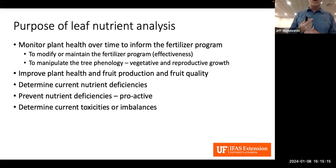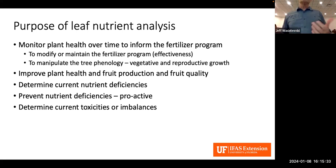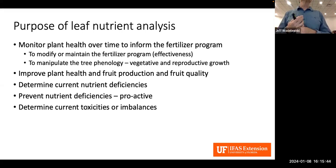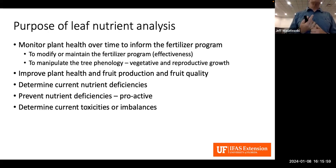Leaf analysis can be used to improve the plant's health, fruit production, and fruit quality. Trees or tropical fruit vines that are not healthy tend to have much less production and lower fruit quality. It's also useful for determining current nutrient deficiencies whether you see them or not — sometimes a deficiency is so mild you don't detect it, but with leaf analysis you can catch it before it becomes a big problem. It can also detect toxicities or imbalances if the plant has received too much of a nutrient.